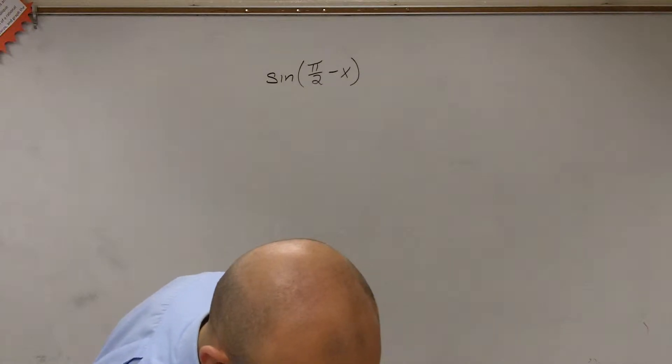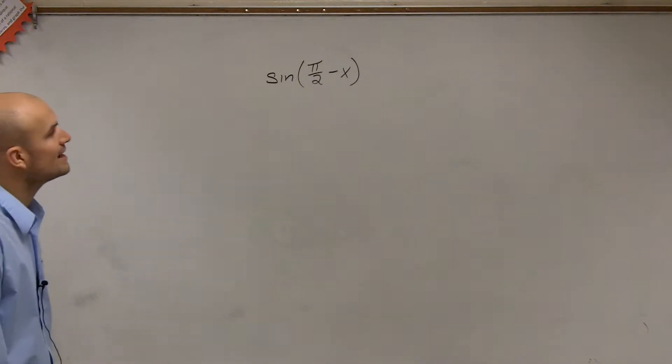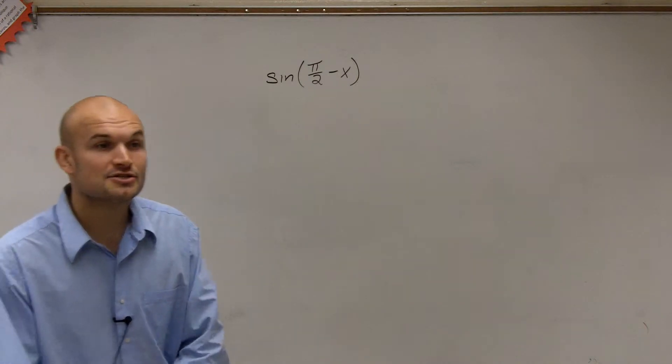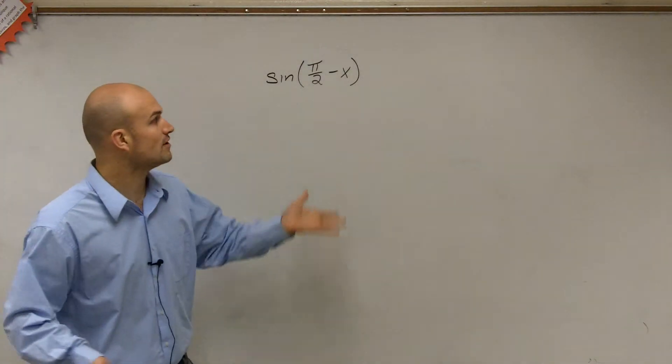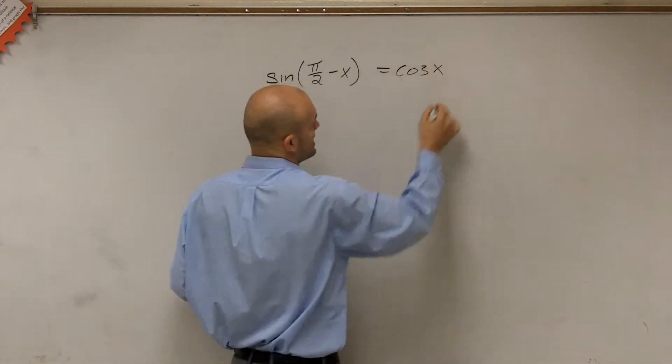What I'd like to do to go through this first problem is we look at this and say sine of π/2 minus x. Initially, you could obviously look at this as the co-function identity, which we know by using the co-function identities means this equals cosine of x.